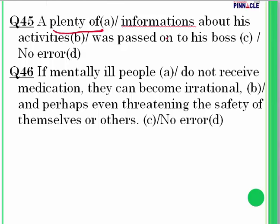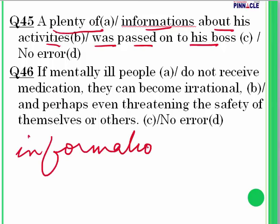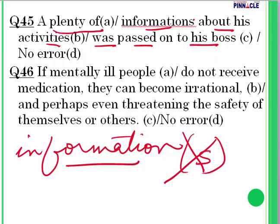Question 45: 'A plenty of informations about his activities was passed on to his boss.' The word 'information' is an uncountable noun; even in the plural it stays the same — 'a lot of information,' never 'informations.' The 's' must be eliminated. Error is in part B.